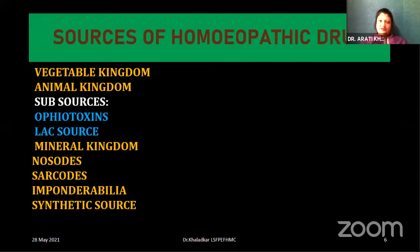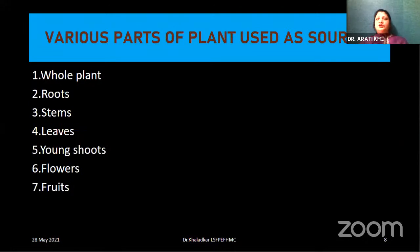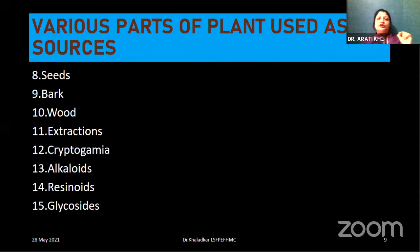We have had sessions for almost three months, and by now you might be knowing what these are. Let us start with the vegetable kingdom, where various parts of the plant are used as sources — either the whole plant, or a root, stem, leaf, young shoot, flower, fruit, seed, bark, wood, extractions, cryptogamia, alkaloids, resinoids, or glycosides. To make this more grasping, we will see what these parts are and two to three important drugs prepared from each, which will help you understand. We have all studied biology recently, so this will review and re-brush your knowledge.